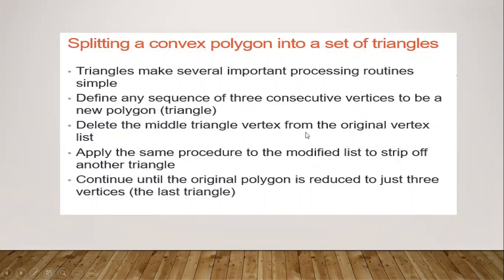For example, if I take any rectangle or hexagon, I first identify any three vertices inside the polygon, form a triangle, and strip off that triangle from the original vertex list. From the modified list I identify one more triangle using three pairs of vertices and strip that off too. Continue this procedure until the original polygon is reduced to just three vertices. This is how we split a convex polygon into a set of triangles.